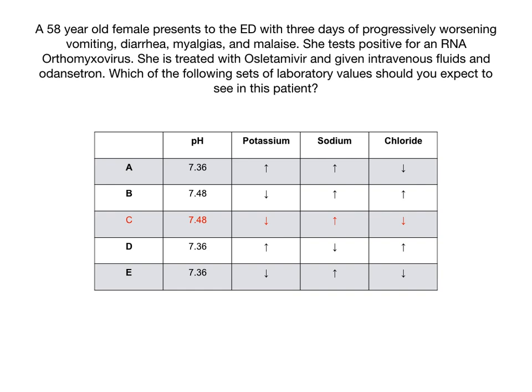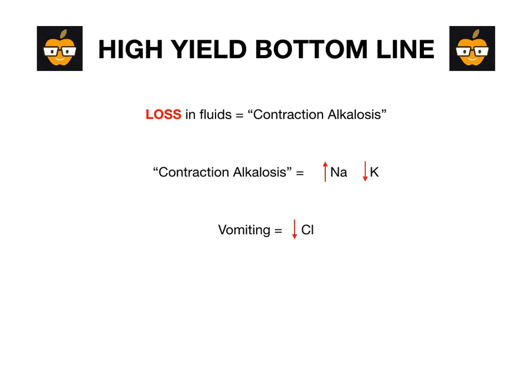The high-yield bottom line: contraction alkalosis shows up a lot, and there are many different causes for it — whether you're bleeding out or vomiting up fluids. Generally, a loss in fluids leads to contraction alkalosis. The body's volume status attempts to contract and maintain itself, making you alkalotic because you lose hydrogen and reabsorb bicarb. In contraction alkalosis, sodium increases and potassium decreases. If the cause of fluid loss is vomiting, you'll also have decreased chloride. Contraction alkalosis gives examiners opportunities to test electrolytes, pH, physiology, and nephron function — so please understand this concept.